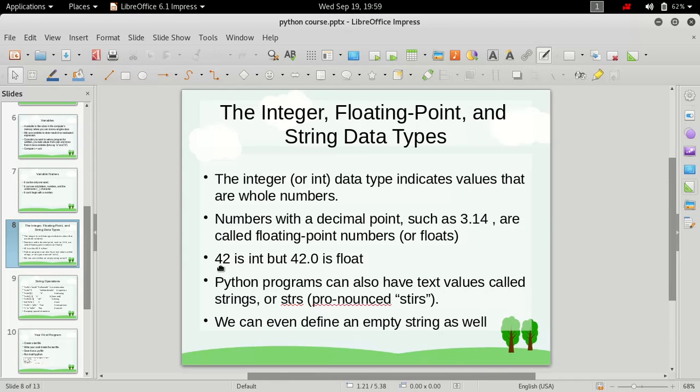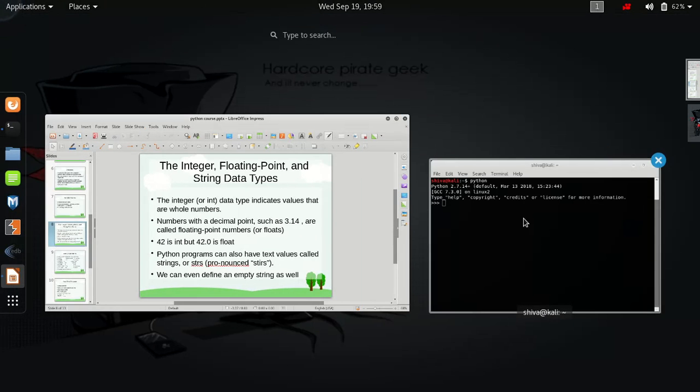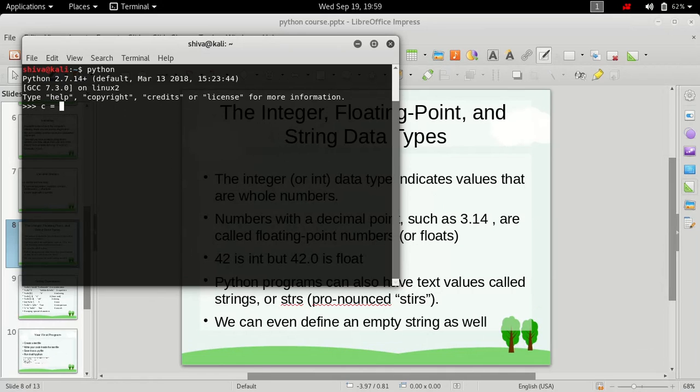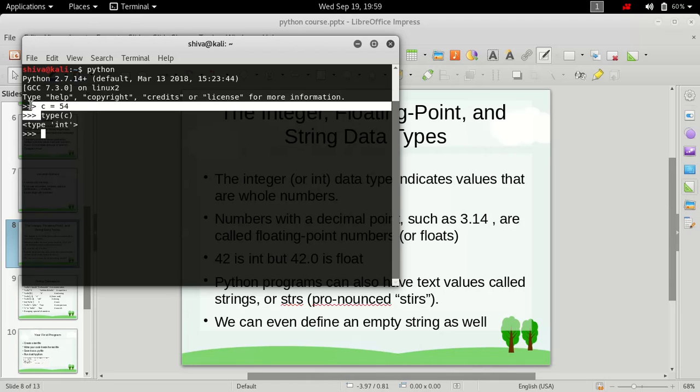Remember that 42 is int but 42.0 is float. If you define a variable c equal to 54 and check its data type using the type function, a built-in function in Python, you'll see it's an integer. In this case, Python automatically declared the variable in memory, assigned it the value 54, and gave it a data type.